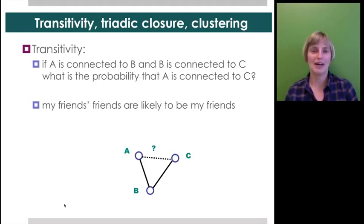So this triadic closure is sometimes also termed transitivity or clustering, and what we want to know is how much of that is going on in the network, because social networks, for example, are highly clustered, because a friend of a friend is likely to also be a friend. But in general, networks do not necessarily have this property, and we still want to know to what extent clustering is present.